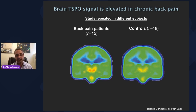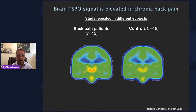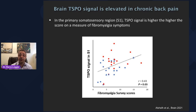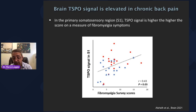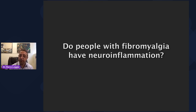As good scientists we wanted to make sure this wasn't a fluke, so we restarted from scratch, recruited more patients and more controls, and again saw the same effects — the thalamus was very hot in patients compared to controls. On top of that we found an interesting observation: in a brain region called the primary somatosensory cortex, the TSPO signal was higher in back pain patients who also had higher symptoms resembling fibromyalgia. The higher the score on the fibromyalgia survey — the more fibromyalgia-like the symptoms — the higher the signal. That was an interesting observation.